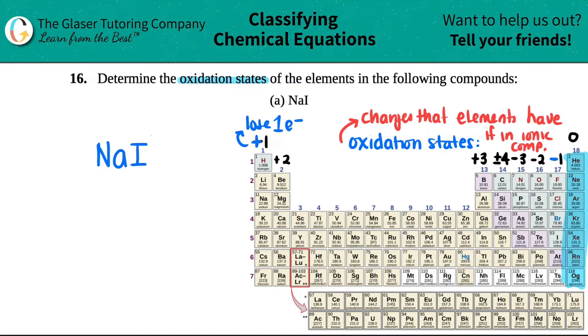Now we should memorize our oxidation state trends. This is just a trend; it's not going to happen all the time, but majority of the time your groups will act like so: Group 1 is generally always going to be a plus one charge when it's in an ionic compound. Group 2 is plus two, group 3 is plus three. Group 4 is plus or minus four. This group is now minus three, negative two, negative one, and then this is zero because your noble gases don't have to do anything. They don't have to lose or gain electrons—they are like the gods on the periodic table.